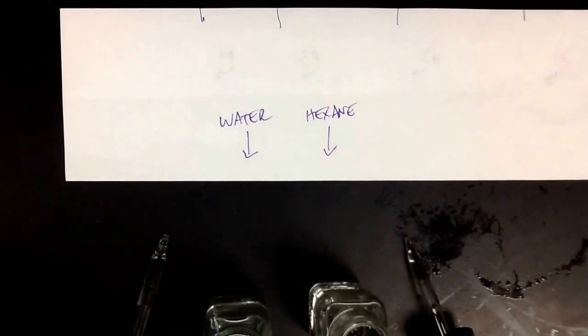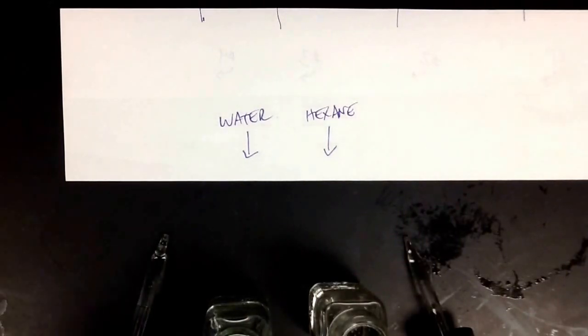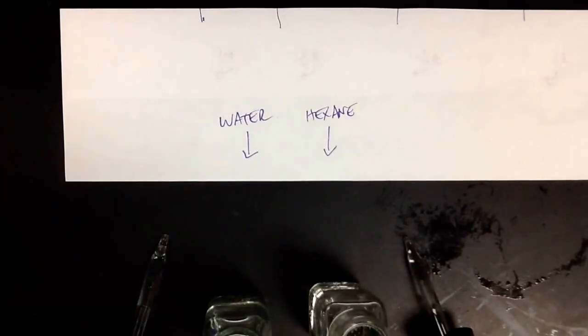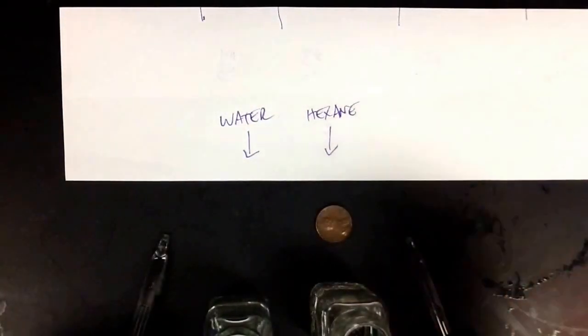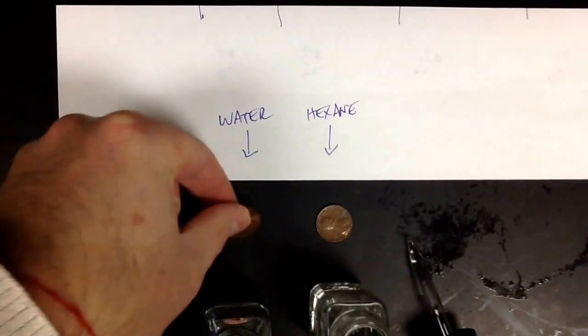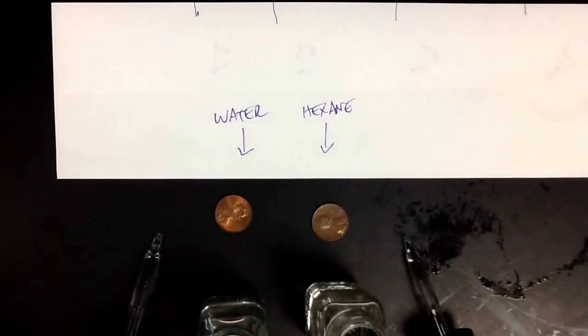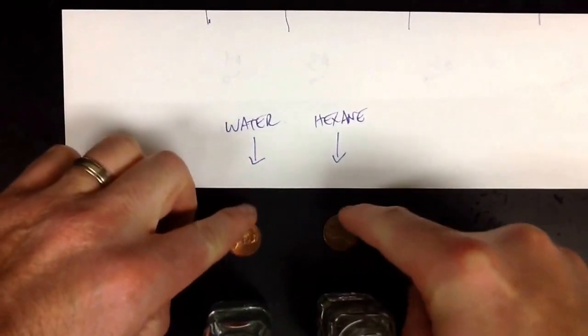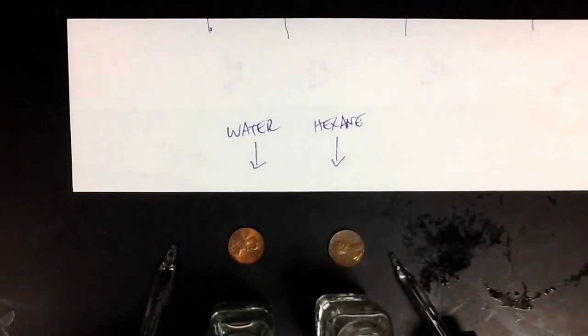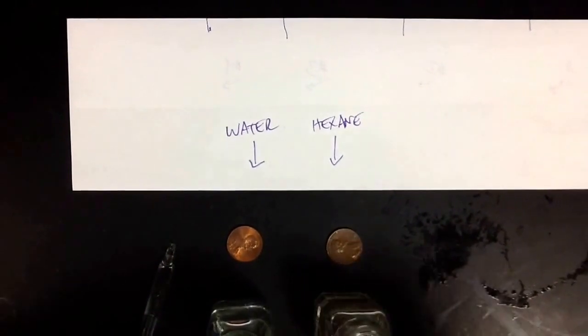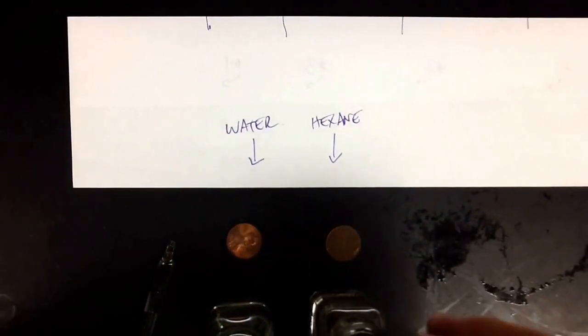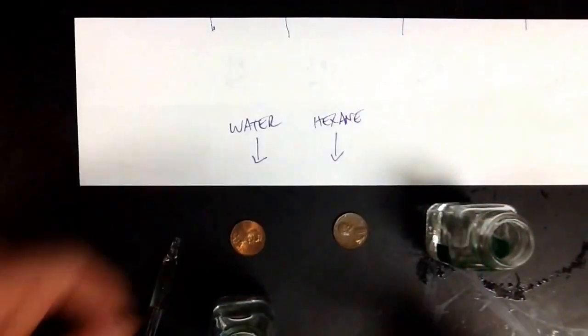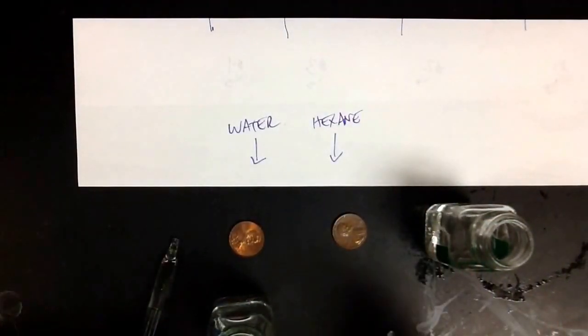Next thing we do is talk about surface tension, and so what we're going to do is put drops of water and hexane on a penny. We'd want to keep track about how many drops we have on the penny, from the water and from the hexane. So, let's start out with hexane, and where we're going to stop is when it overflows. Maybe I'm going to move this off to the side to get a little better light here.